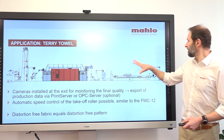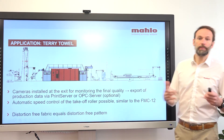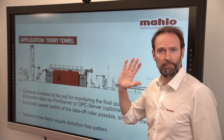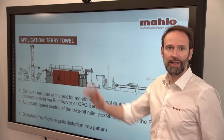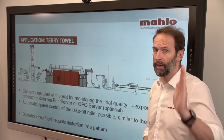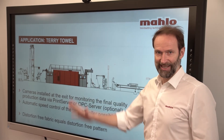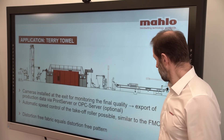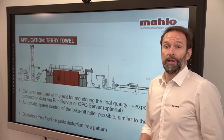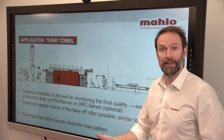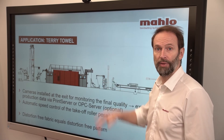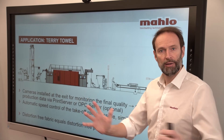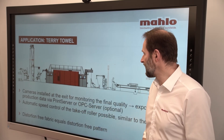The cameras installed at the exit monitor the final quality — simply because you want to give your customers data like insurance showing the good quality coming out of your production. Automatic control of speed is also possible with those cameras, as they give a clear indication about the repeat at that stage as well.